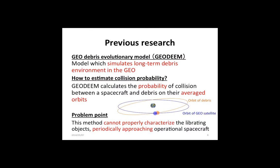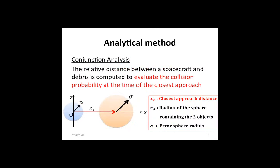As an evaluation method for collision probability, Kyushu University has developed GeoGenes. This is an orbital debris evolutionary model which simulates the long-term debris environment in the geostationary region. GeoD calculates the probability of collision between a spacecraft and debris on smooth orbits given by time-average propagation. This is one problem in GeoD, since the actual position of debris is not considered. This method cannot properly characterize the vibrating objects periodically approaching operational spacecraft.